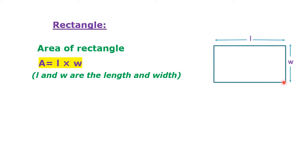Rectangle. Area of rectangle A equals L times W, where L and W are the length and width. The perimeter of rectangle P equals 2 times quantity L plus W.